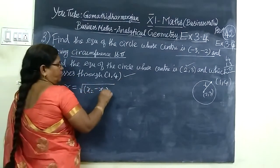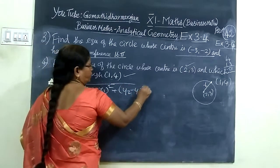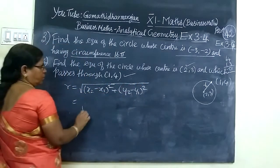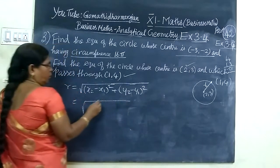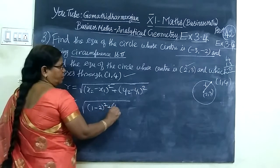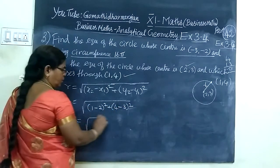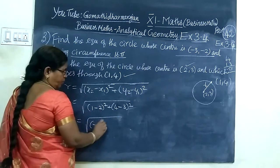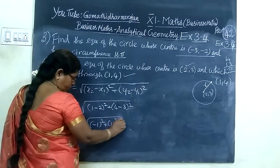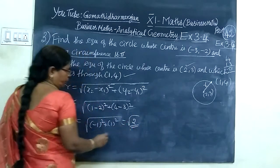The distance formula is √[(x₂ - x₁)² + (y₂ - y₁)²]. So this equals √[(2-1)² + (3-4)²] = √[1 + 1] = √2. This is the radius.